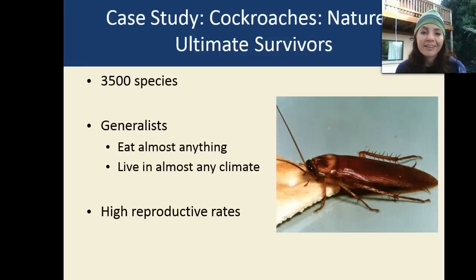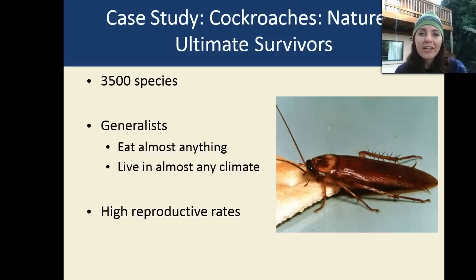Case study: the cockroach. These are nature's ultimate survivors. There are already 3,500 species that have been discovered. They are really broad generalists — they eat almost anything, can live in almost any climate, and can even withstand extreme amounts of radiation. They also have very high reproductive rates.